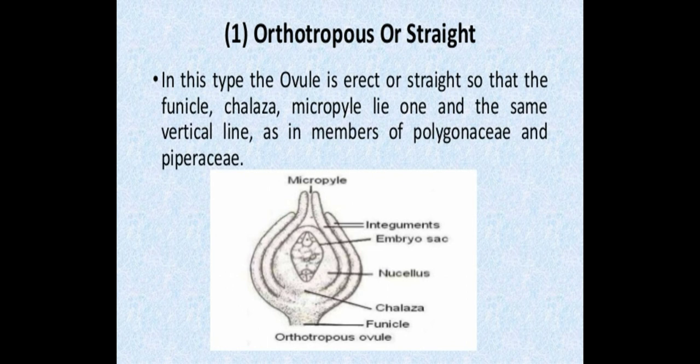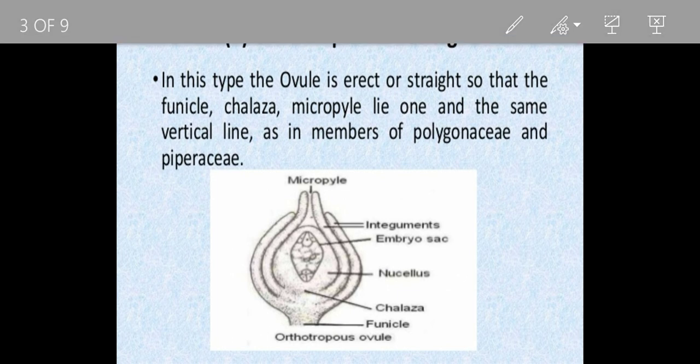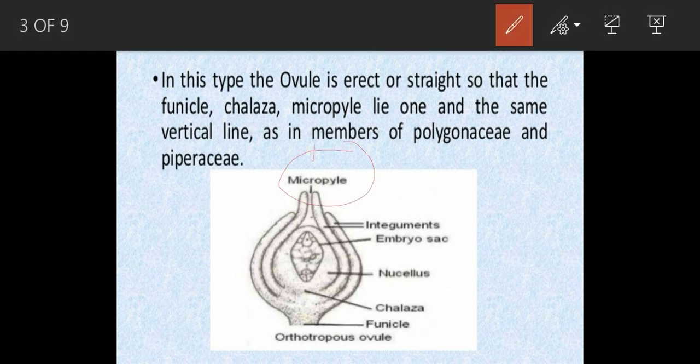The first type is the orthotropous ovule, or straight ovule. This is quite common in gymnosperms. In this type of ovule, all three ends — that is, the micropylar end, chalazal end, and funicle — lie in a straight line. That's why it is called the straight ovule. It is found in members of the Polygonaceae and Piperaceae family.